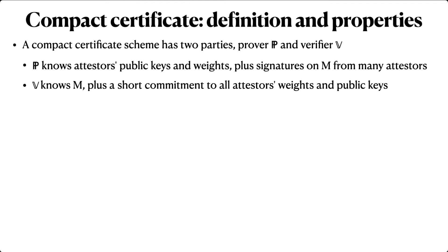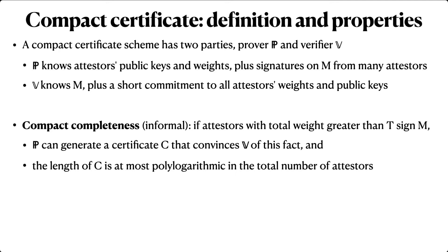A Compact Certificate Scheme has two properties. First, Compact Completeness means that if the prover indeed knows sufficiently weighty signatures, it can convince the verifier of this fact using a certificate that is very short. In particular, at most polylogarithmic in the total number of attesters.